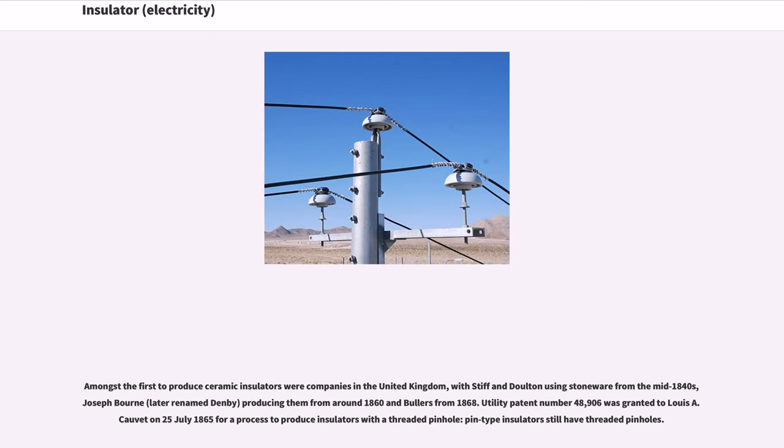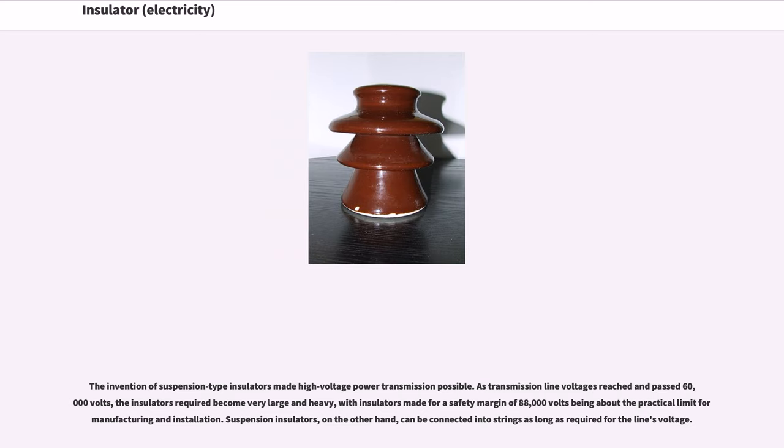Amongst the first to produce ceramic insulators were companies in the United Kingdom, with Stiff and Doulton using stoneware from the mid-1840s, Joseph Bourne, later renamed Denby, producing them from around 1860, and Bullers from 1868. U.S. patent number 48,906 was granted to Louis Cauvet on July 25, 1865 for a process to produce insulators with a threaded pinhole. The invention of suspension type insulators made high voltage power transmission possible. As transmission line voltage reached and passed 60,000 volts, insulators made for a safety margin of 88,000 volts were about the practical limit for manufacturing and installation.